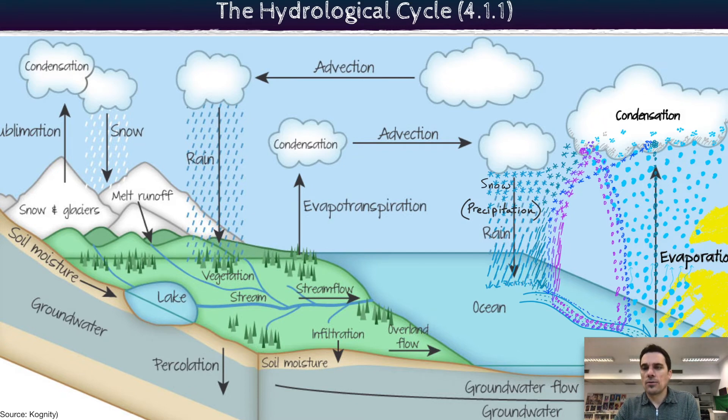So clouds are a store for water. Oceans are a store. Lakes are a store. There's lots of pieces to this puzzle when we look at the water cycle.